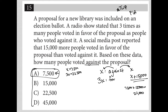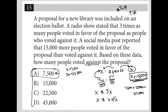Why does choice A have to be correct? Because the three x relationship — the for votes being three times the against votes — also holds true when we apply the other condition the question gave us: that the for votes were 15,000 more than the against votes. Both relationships must be true. We have x and three x, and x and x plus 15,000 — and in both cases, that works out when x equals 7,500.